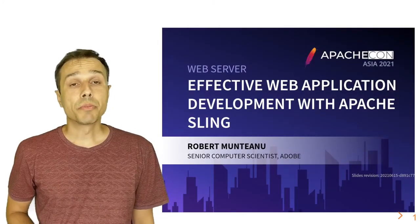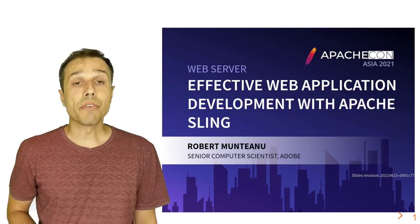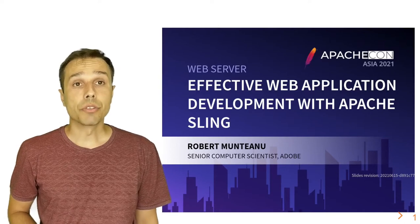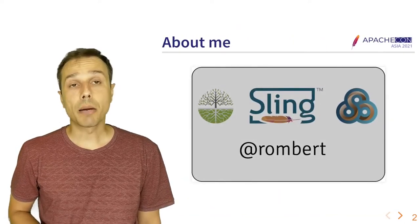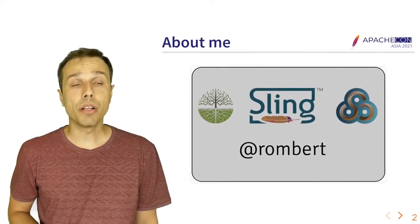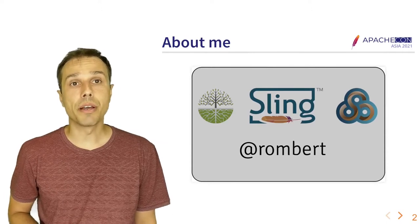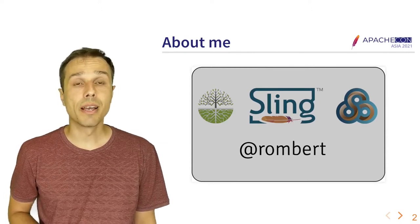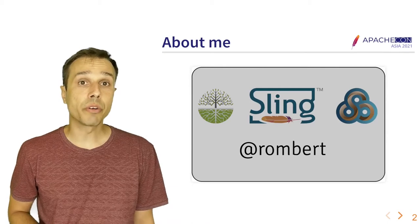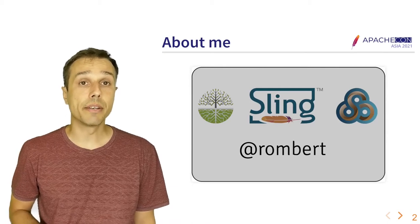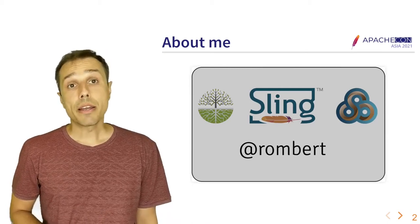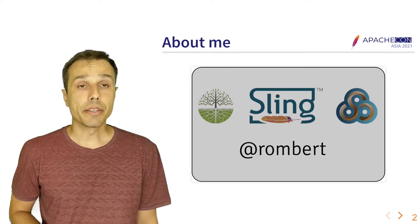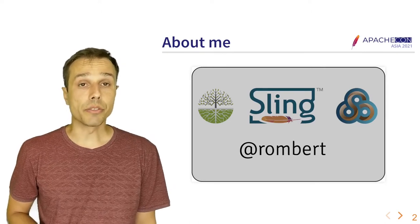Welcome, everyone. My name is Robert Montano. This is Effective Web Application Development with Apache Sling. A couple of words about myself: I work as a senior computer scientist for Adobe in Basel, Switzerland. I'm a member of the Apache Software Foundation, serving as the current PMC chair of Apache Sling, and I'm also involved in the Jackrabbit and Felix communities.